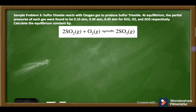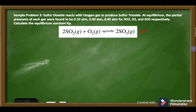Sample problem number three: Sulfur dioxide reacts with oxygen gas to produce sulfur trioxide. At equilibrium, the partial pressures were found to be 0.10 atm for SO2, 0.30 atm for O2, and 0.45 atm for SO3. Calculate the equilibrium constant KP. Since the equation is already balanced, we proceed with the equilibrium expression.